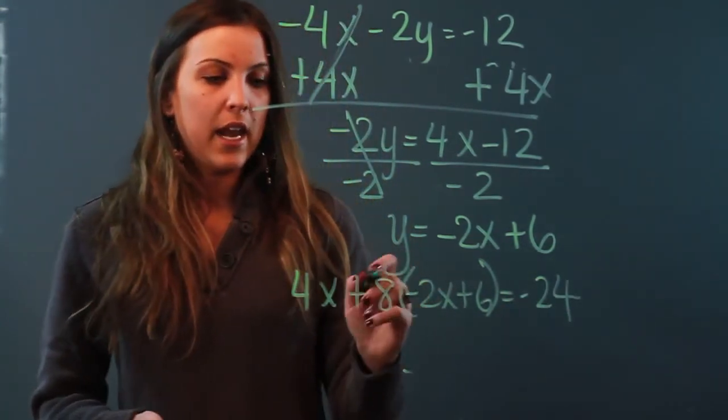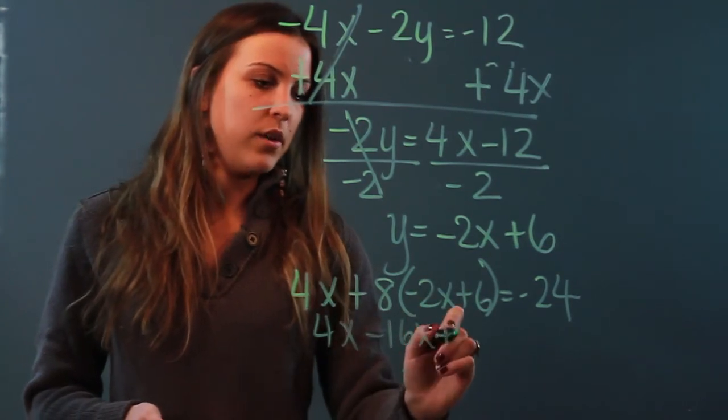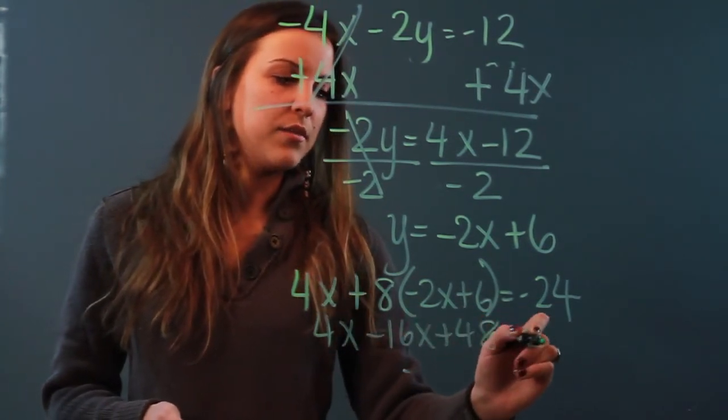All right and I'm going to distribute so I get 4x minus 16x plus 48 equals negative 24.